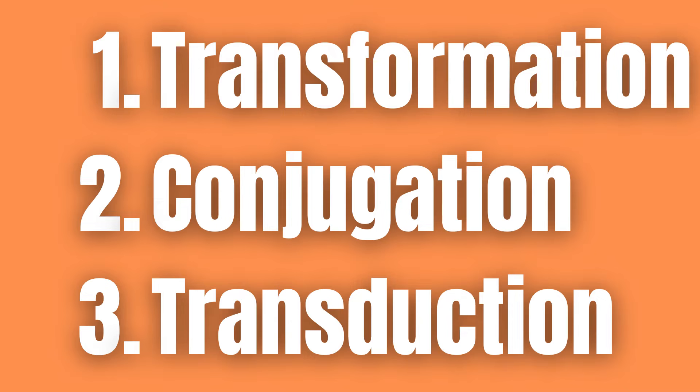The three main ways of bacterial recombination include transformation, conjugation, and transduction.